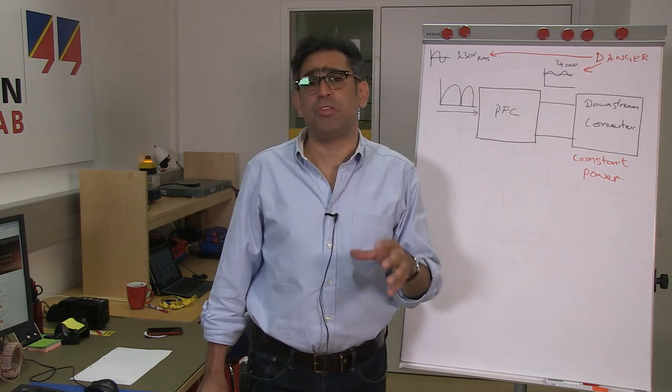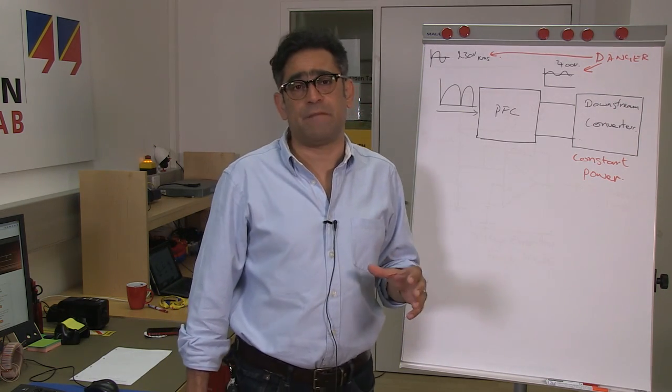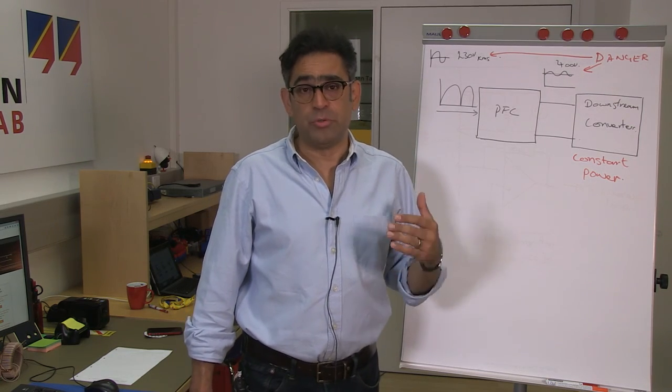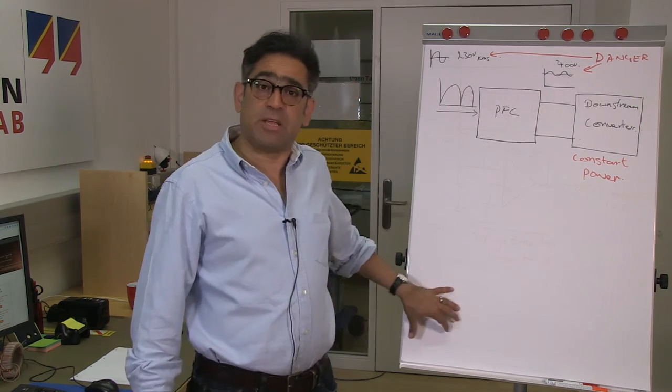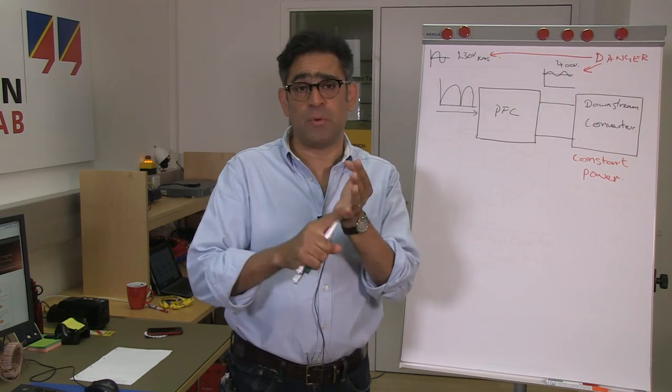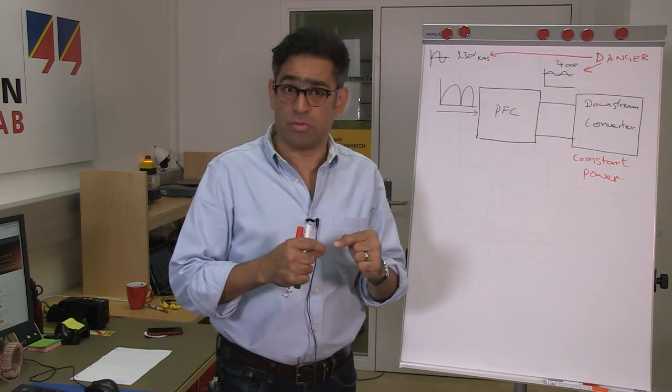A power factor correction unit that we're going to measure is one of the most popular ones that is around, and that is a continuous conduction mode boost converter. It will run in average current mode. So we have two loops, we've got a voltage loop and we've got a current loop. And in this video we're going to be measuring the voltage loop.